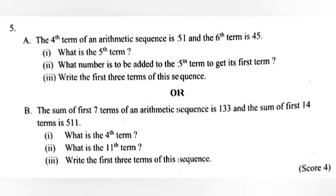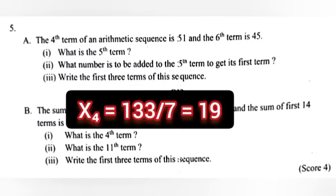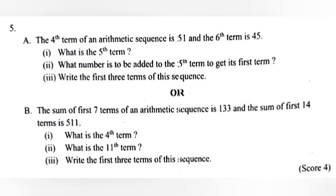Problem 5B: The sum of first 7 terms of an arithmetic sequence is 133 and the sum of first 14 terms is 511. Part 1: What is the fourth term? Answer: x₄ = 133 / 7 = 19.